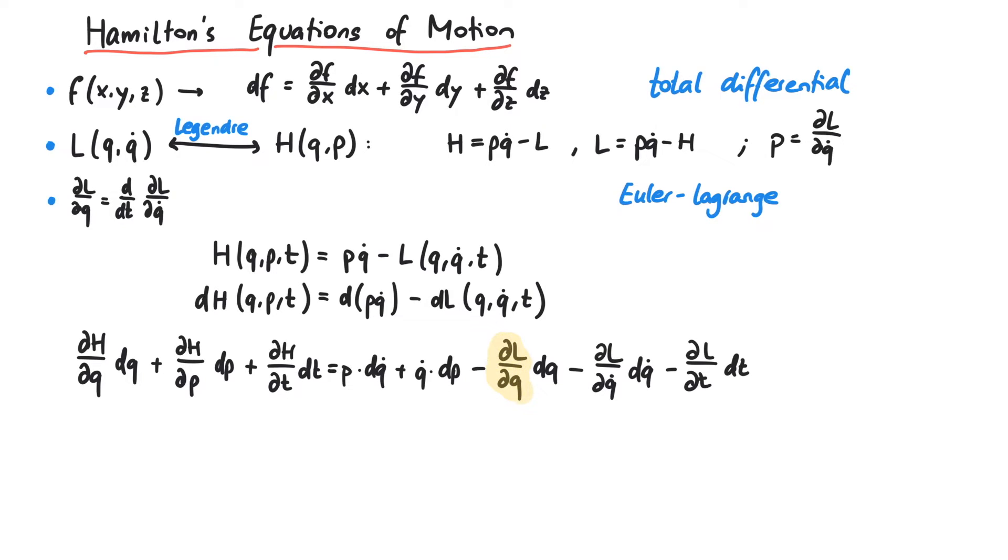For this term here, we use the Euler-Lagrange equation to write it as d over dt and the partial derivative of L with respect to q-dot, which is exactly the conjugated momentum p. And also over here, we can write this as p.